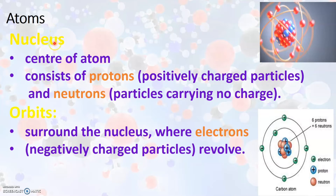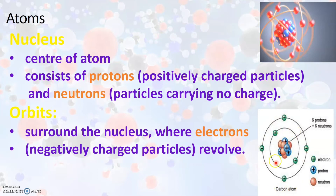An atom consists of a nucleus, protons, neutrons, electrons and orbits. As you can see in the picture, the nucleus is the center of the atom, which consists of positively charged particles called protons and particles that do not carry any charge called neutrons. An orbit is an imaginary path surrounding the nucleus, and negatively charged particles called electrons are revolving around the nucleus in these orbits.